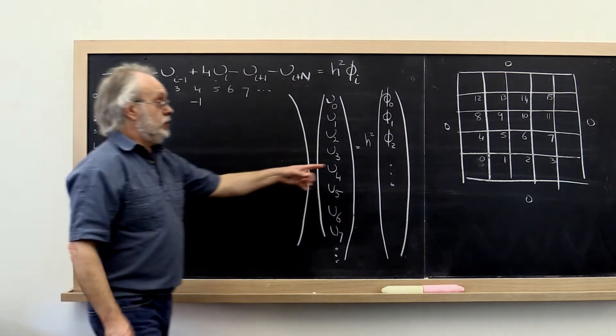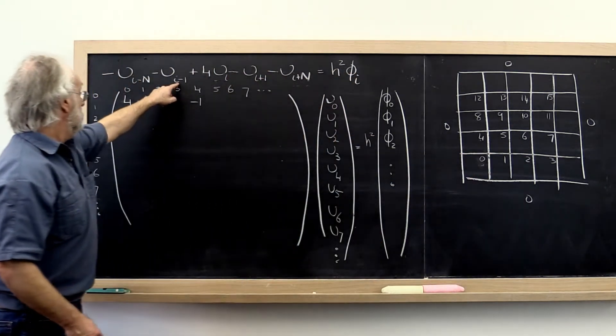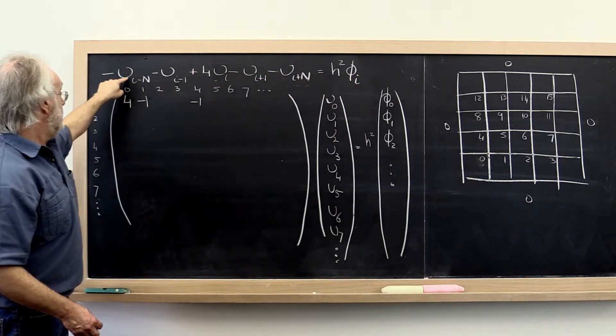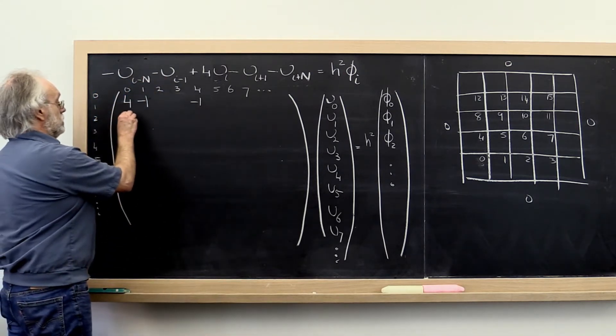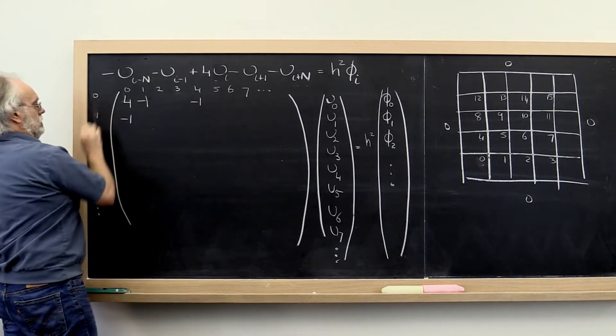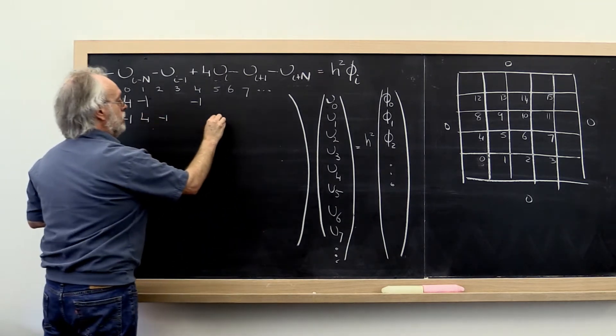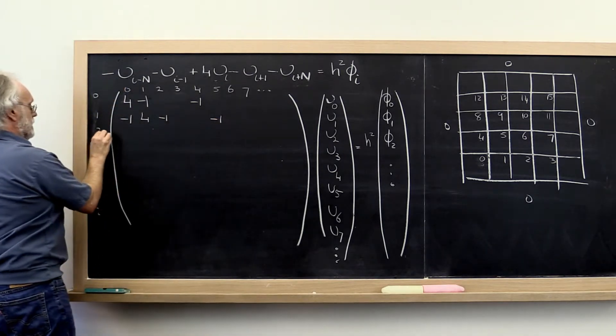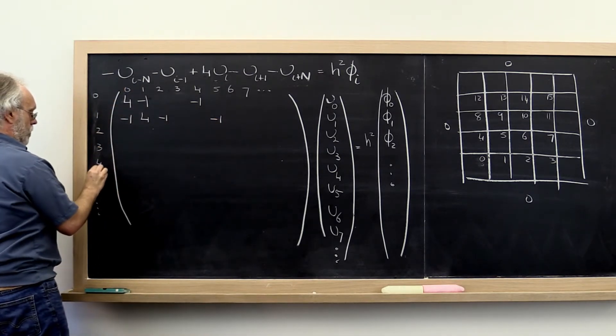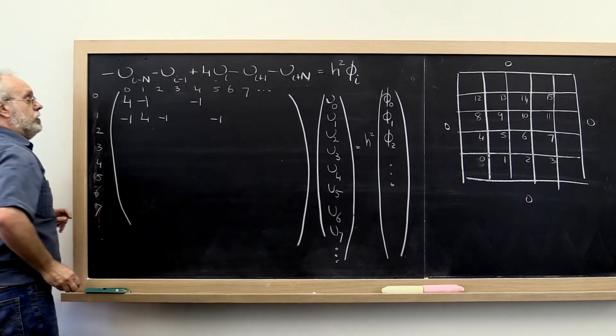Then we move on to the next point. Now i is equal to 1. So what we get is this is 0, but this gives me a minus 1 here. That's 4, minus 1, minus 1. Let's rewrite this here again. One more. 5, 6, 7, and so forth.